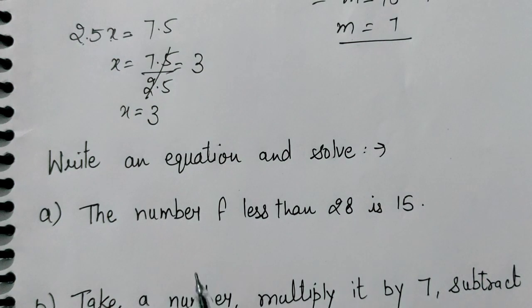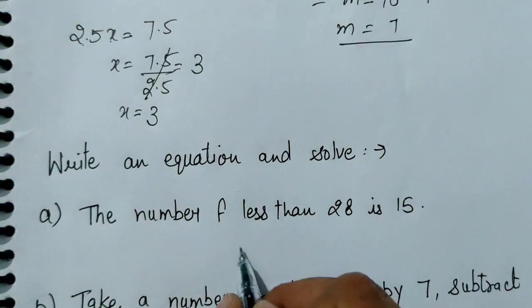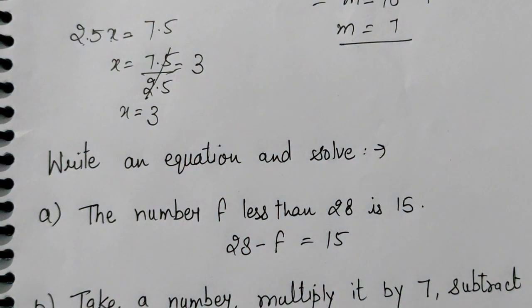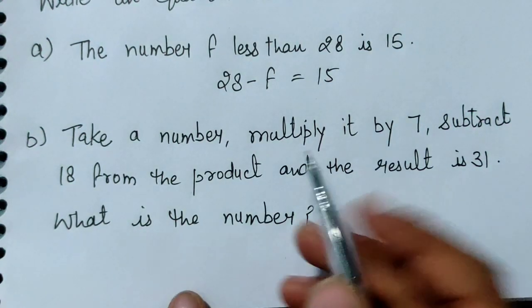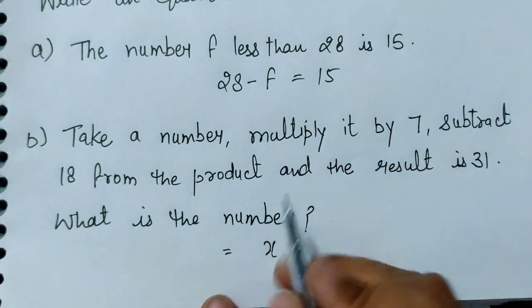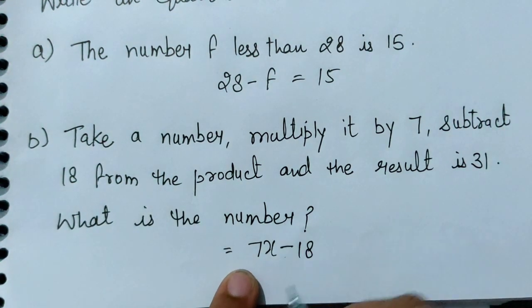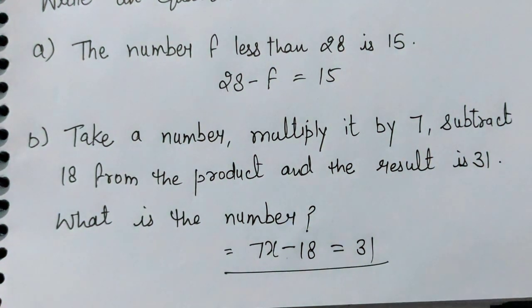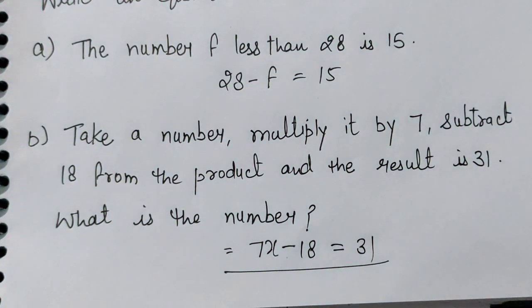Next: write an equation and solve। 'The number F less than 28 is 15' — 28 minus F equal to 15। Next word problem: take a number X, multiply it by 7, subtract 18 from the product, and the result is 31। Equation: 7X minus 18 = 31। 18 को इधर लेकर जाओ तो plus हो जाएगा: 7X = 49। So X की value 7 आ जाएगी।